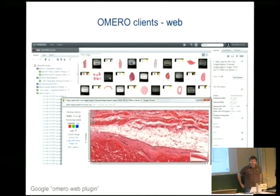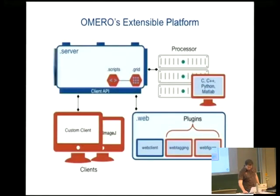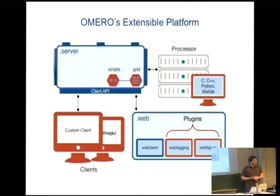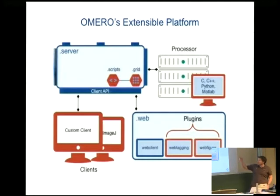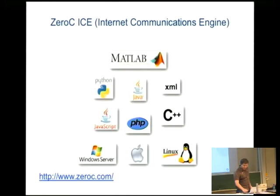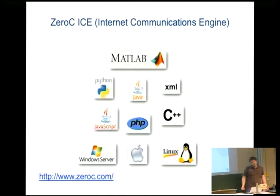I'm going to talk about extensibility and how we relate to the open source world. Everything in red here is a place where we can be extended, and everything in blue is the core system itself. As Blasje said, you can extend the Java client, the web client, and the server itself by adding new services to it. We also have a scripting engine, so you can write image analysis algorithms that can actually be run through some grid infrastructure — and a lot of that comes for free from ZeroC. Clients can be written in any language and on any platform.